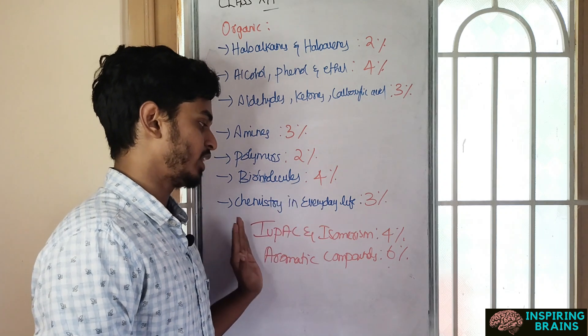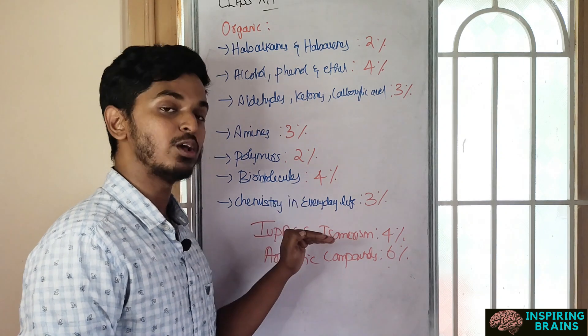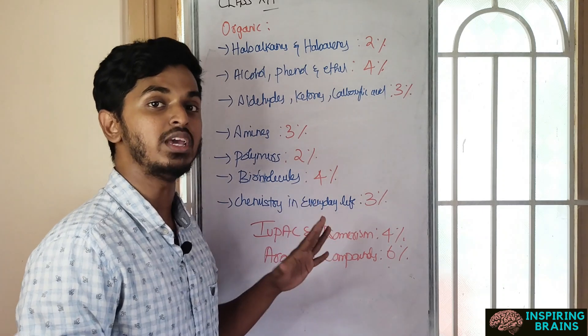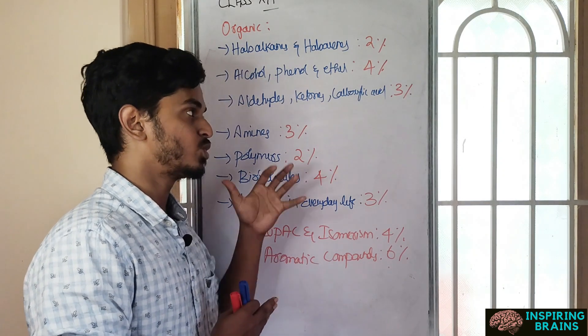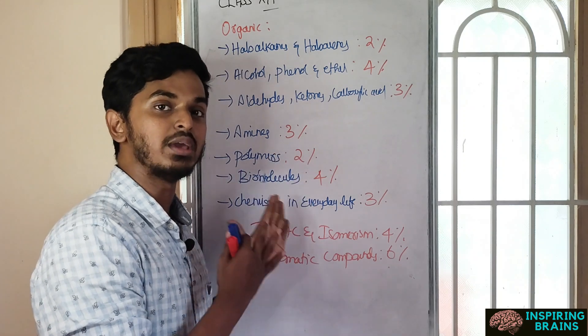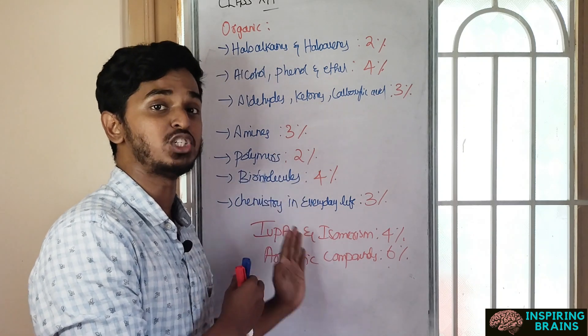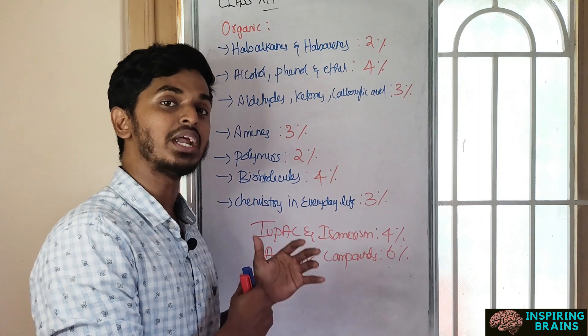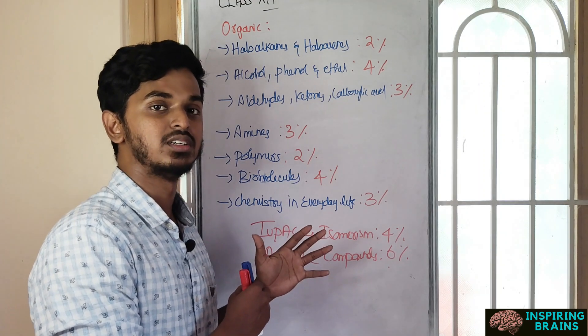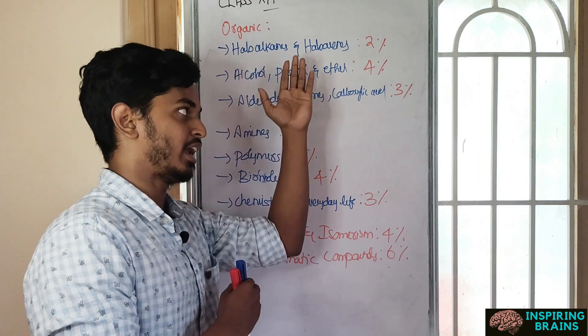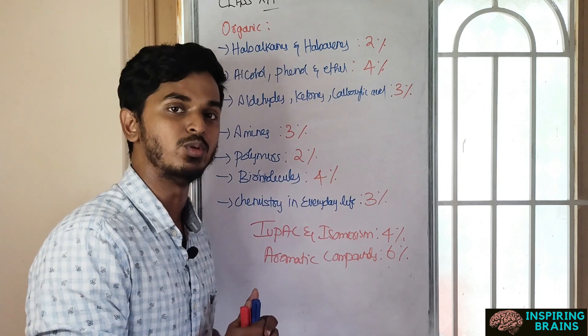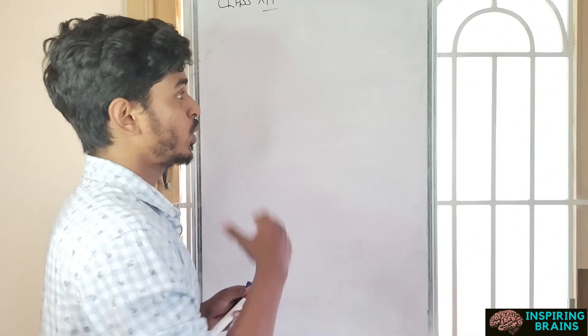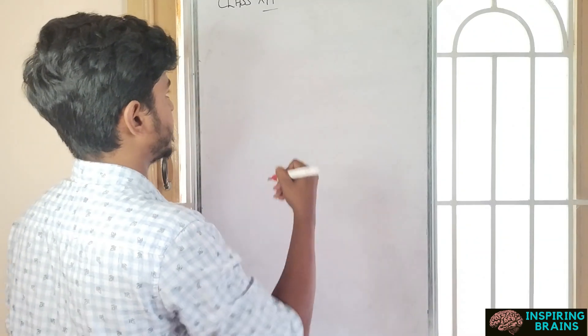Special reference to IUPAC name and isomerism - you should know the basics from general organic chemistry. Aromatic compounds - all aromatic compounds in chemistry of NCERT given special preference, separately carries 6 percentage marks. They can ask you in any unit but giving more preference to aromatic compounds.